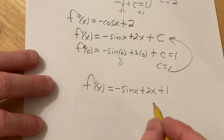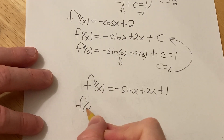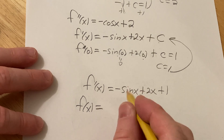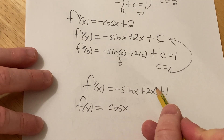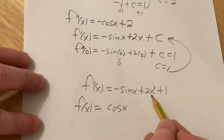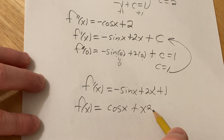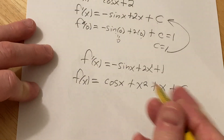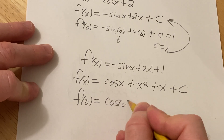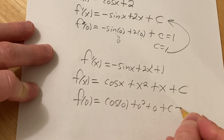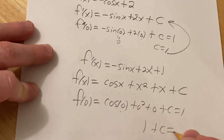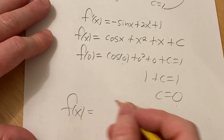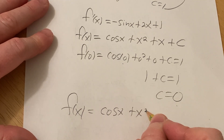We integrate one more time to get f(x). The derivative of cosine is negative sine, so integrating negative sine gives cosine x. Integrating 2x using the power rule gives 2x squared over 2, which is x squared. Integrating 1 gives x, and we add constant C. Using f(0) = 1: cosine(0) plus 0 squared plus 0 plus C equals 1. Cosine(0) is 1, so C equals 0. The final answer is f(x) = cosine x plus x squared plus x.